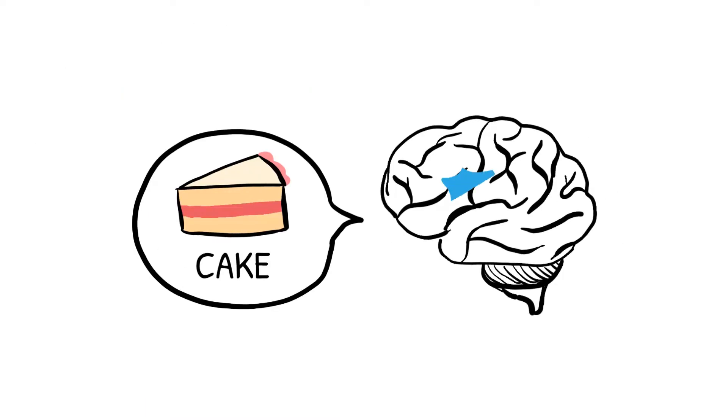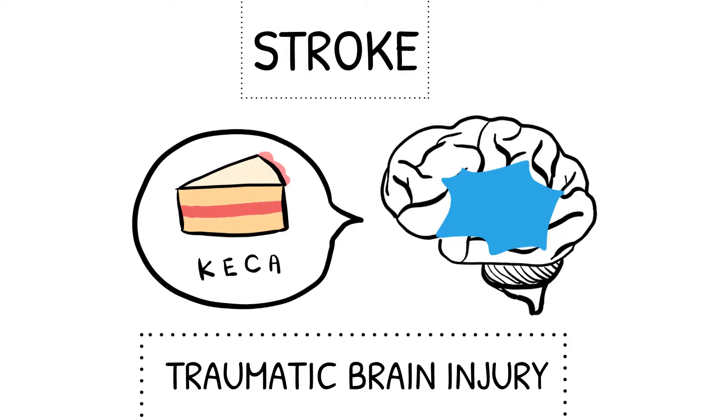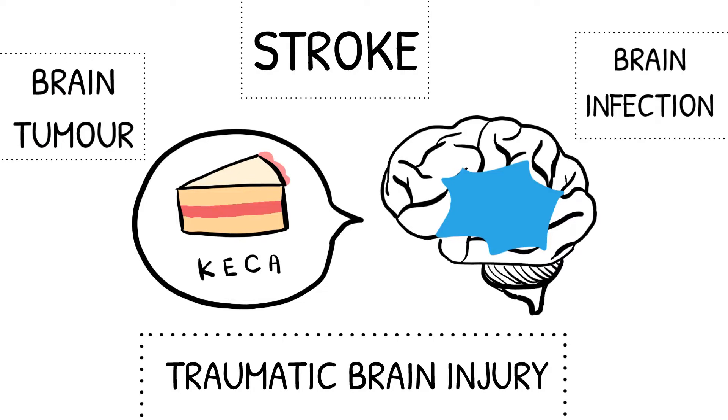Aphasia happens when the language parts of the brain are damaged or injured. The most common cause of aphasia is stroke, but it can also happen after a traumatic brain injury, brain tumour, or infection.